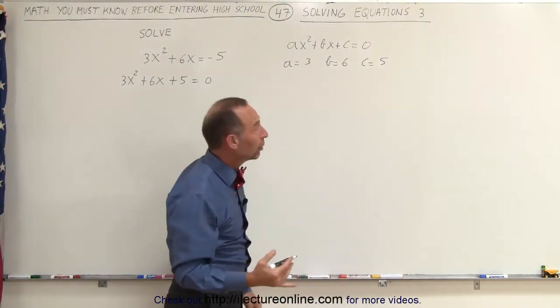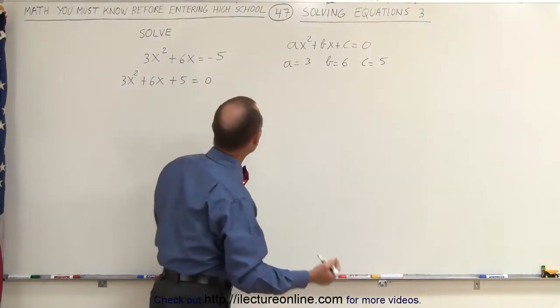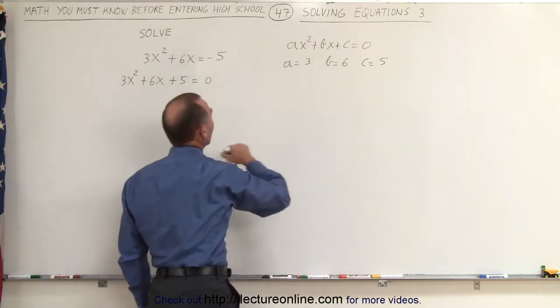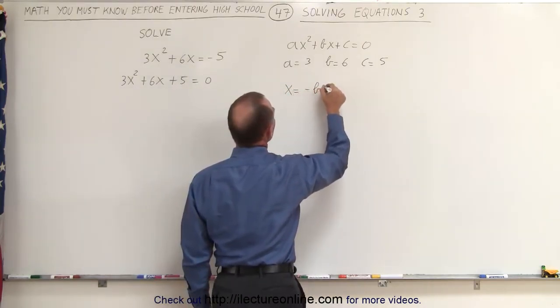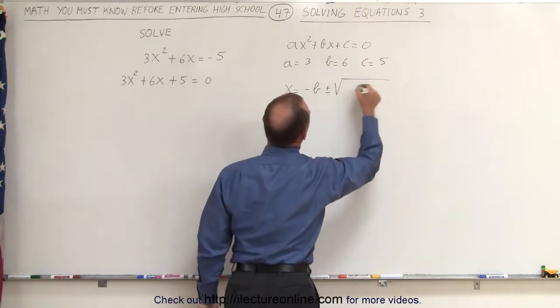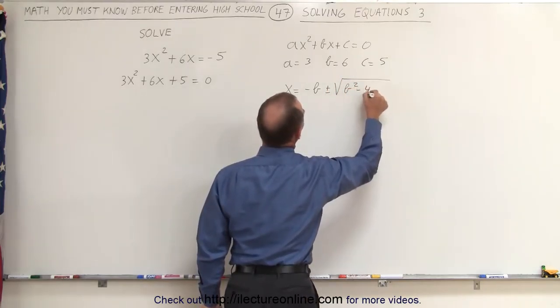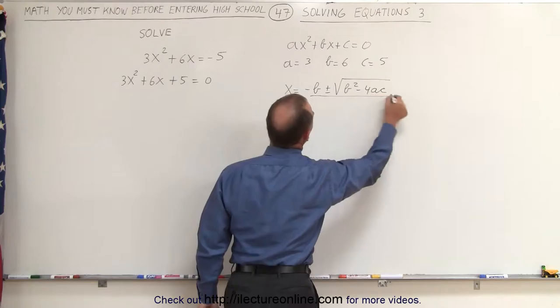And the quadratic formula will give you the values for x that satisfies this equation. You can then say that x is equal to -b ± √(b² - 4ac), all divided by 2a.